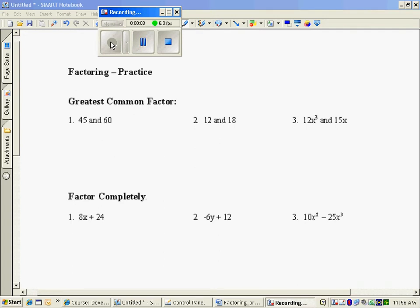The solutions to the practice problems for factoring. When I look at 45 and 60, the greatest number that goes into both of those would be 15. 12 and 18, the greatest common factor would be 6.